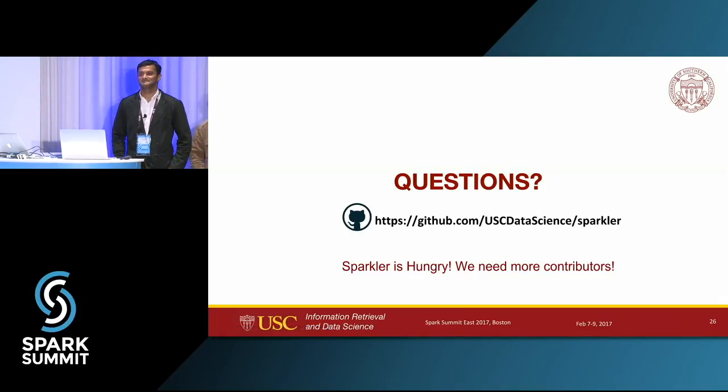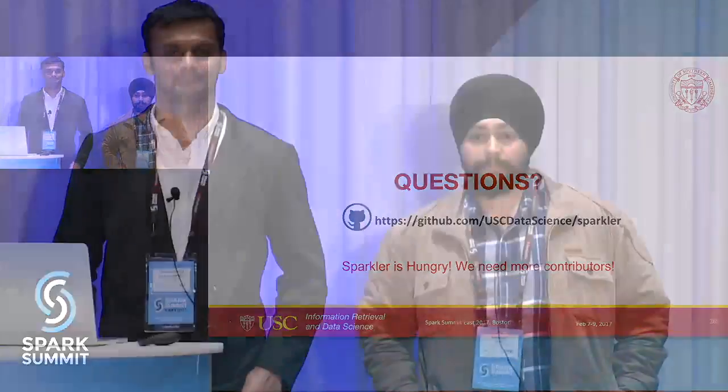If you have any questions, we'd like to take them. A question from the audience about Sparkler: you mentioned using executors in crawling — how many executors are spawned based on the seed nodes? And have you tried distributed Nutch and what performance are you seeing between distributed Nutch and Sparkler, and why did you go the Spark route? Great questions — I'll let Karanjit answer since he's been running a lot of crawls recently.